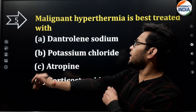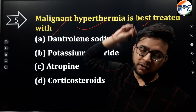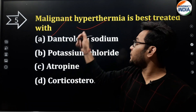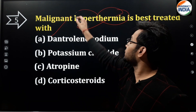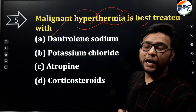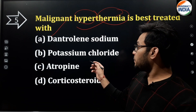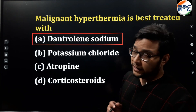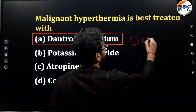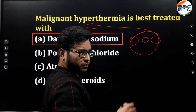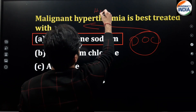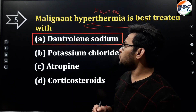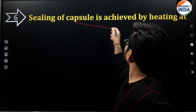Question 5: malignant hyperthermia is best treated with — options are potassium chloride, dantrolene sodium, atropine, or corticosteroids. Malignant hyperthermia means abnormally high temperature. The correct answer is dantrolene sodium — it is the drug of choice (DOC) for malignant hyperthermia. Halothane can also cause malignant hyperthermia.